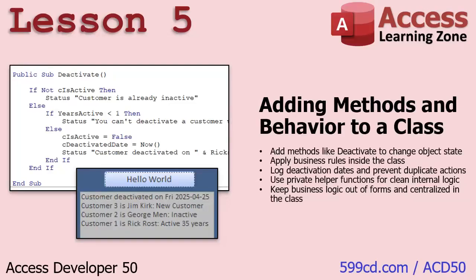In Lesson 5, we're going to add methods and behavior to our class. It's no longer just about storing and retrieving data — now we can actually do stuff. For example, deactivating a customer: we can flip them from active to deactivated, but the logic is handled inside the class itself. We can add rules, like you can't deactivate a customer that's less than a year old. That's all covered in Lesson 5.